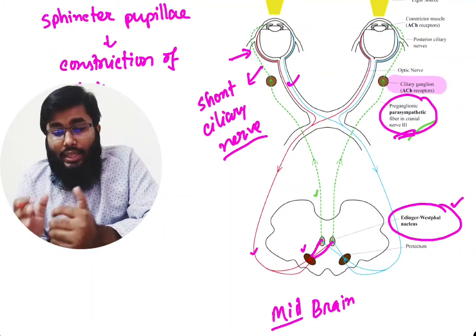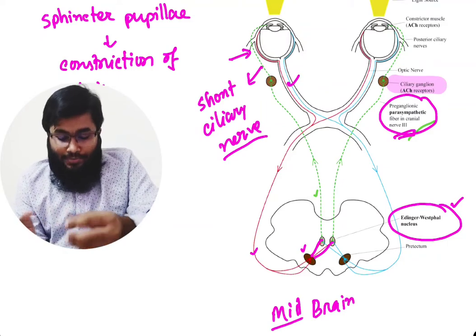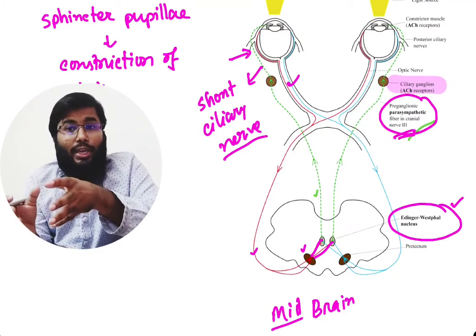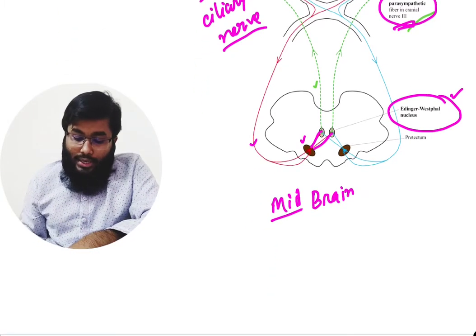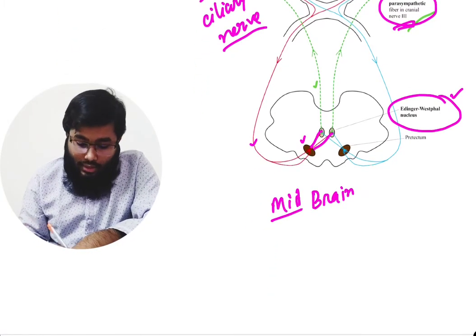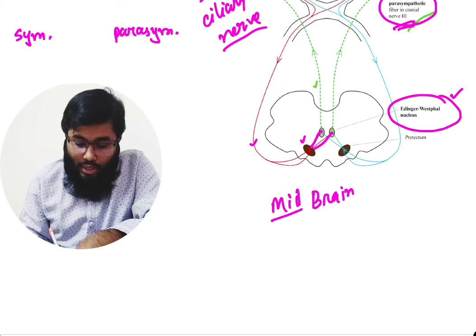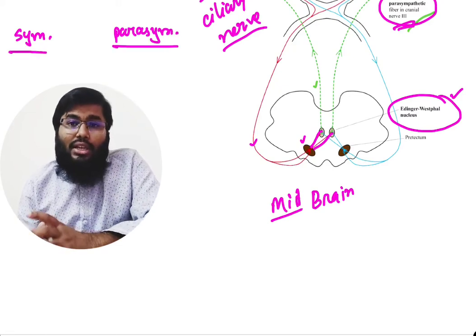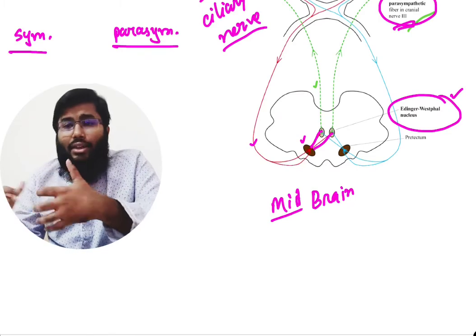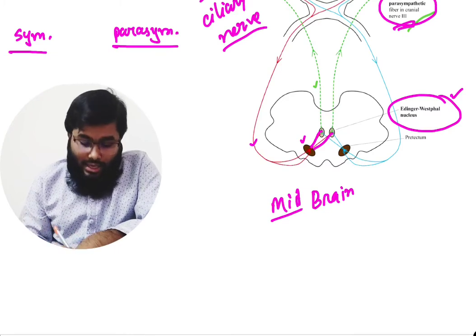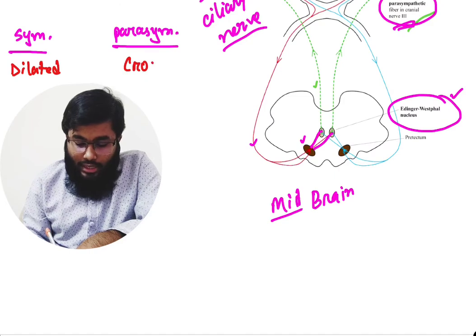If the ciliary ganglion is damaged, then the constrictor pupillae muscle will not work properly and the pupil will be dilated. Why will the pupil be dilated? Because there is always a sympathetic and parasympathetic balance in our body — they work in opposite directions. In our eyes, the sympathetic fiber causes the iris to dilate and the parasympathetic fiber causes the iris to constrict.